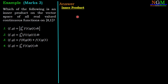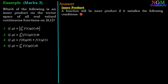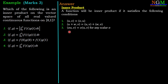This is a problem of inner product, so first we recall the definition. An operation is an inner product if it satisfies four conditions: (1) ⟨u,v⟩ = ⟨v,u⟩; (2) ⟨u+w, v⟩ = ⟨u,v⟩ + ⟨w,v⟩; (3) ⟨αu, v⟩ = α⟨u,v⟩ for any scalar α; (4) ⟨u,u⟩ ≥ 0, and ⟨u,u⟩ = 0 if and only if u = 0. Any operation satisfying these four conditions is an inner product.